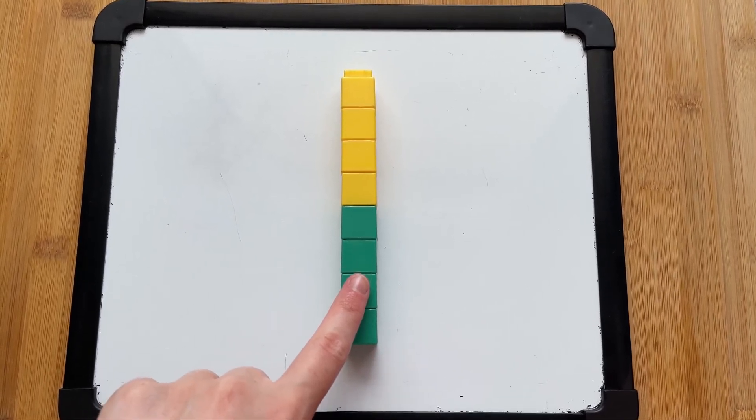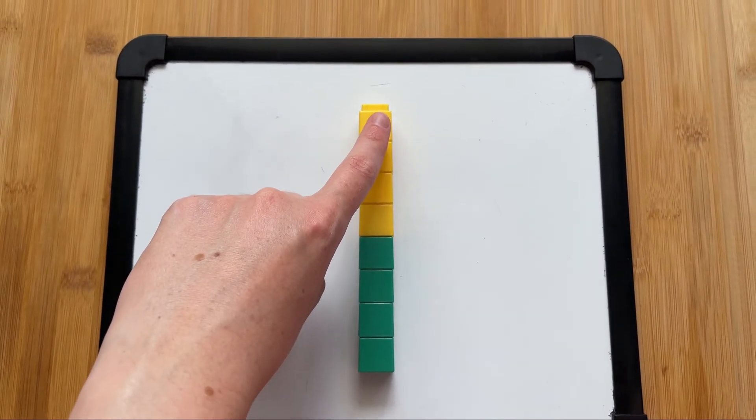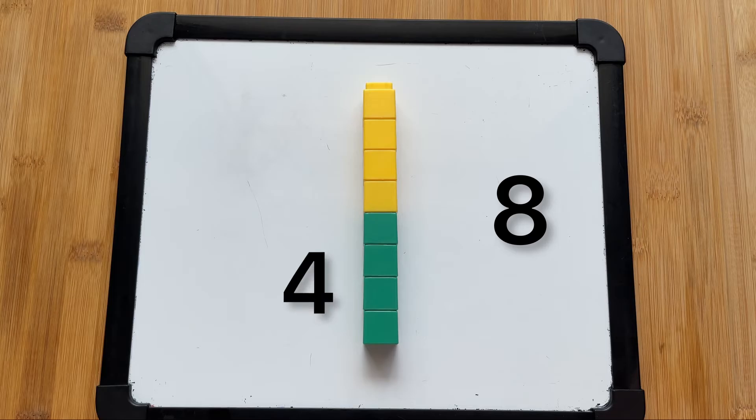One, two, three, four, five, six, seven, eight. So all together we have eight blocks. That means that four green blocks and four yellow blocks add together to make eight blocks in total.